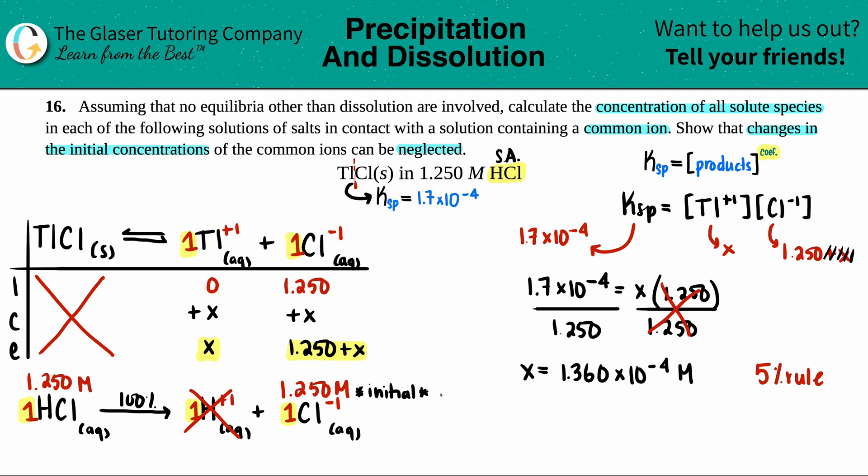Now what we do is we just answer the question. We've got to find those concentrations. So we go back to the E line. We say that TL plus 1 was x, and literally that was the x value. So that's the concentration for that one. And then the CL was 1.250 plus the x value. So you just got to plug in that x value with 1.250. So 1.25 plus 1.360 times 10 to the negative fourth. And yeah, it didn't even change it. So 1.250 molarity. And those are your two answers. And that's the answer for this question.